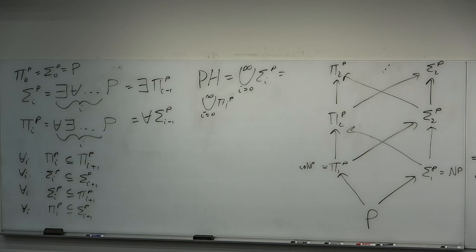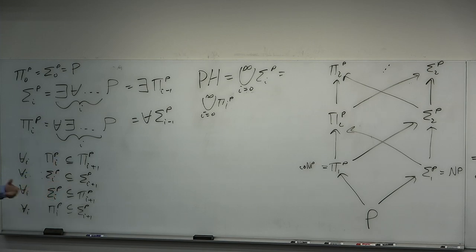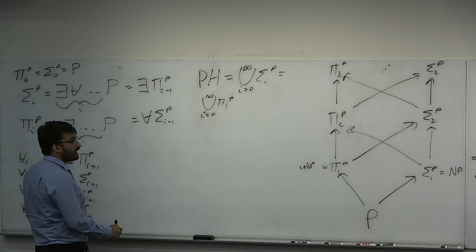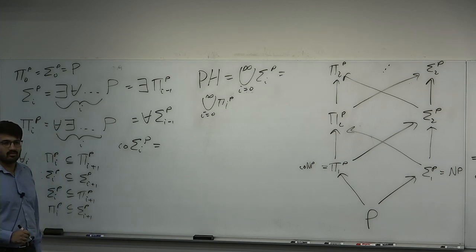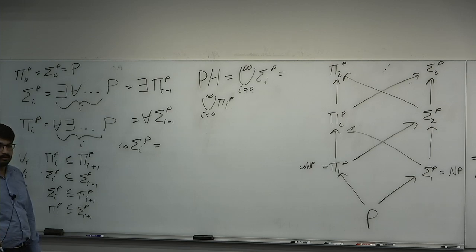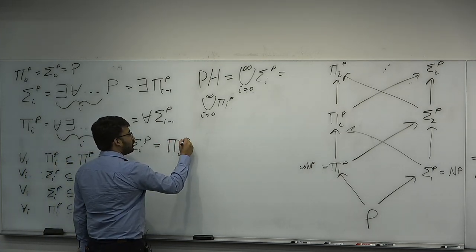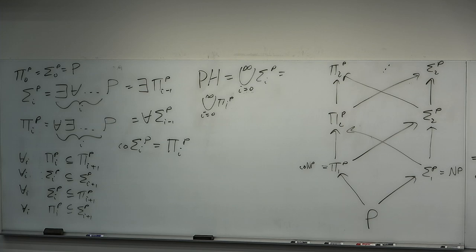Let's make sure we understand the definition. Each level is defined logically this way. It's not a nice algorithmically defined class the way P is poly-time or PSPACE is poly-space. You may also observe: what is co-sigma-i-P? That's just pi-i-P — the complement of the elements of one of the right-hand levels gives the other. Although it seems complicated, it has a kind of predictable structure.